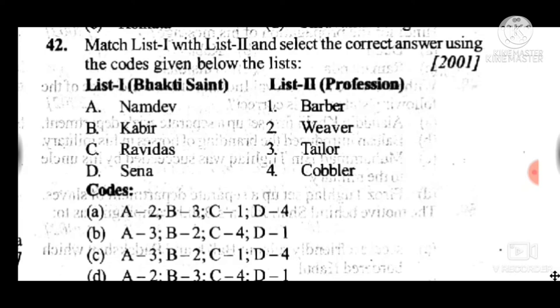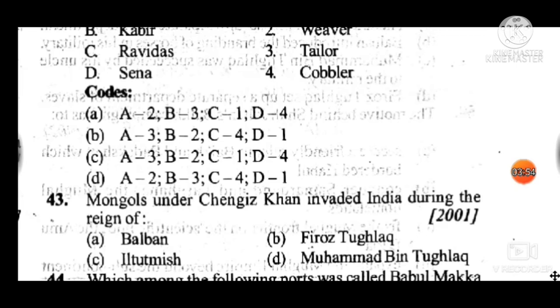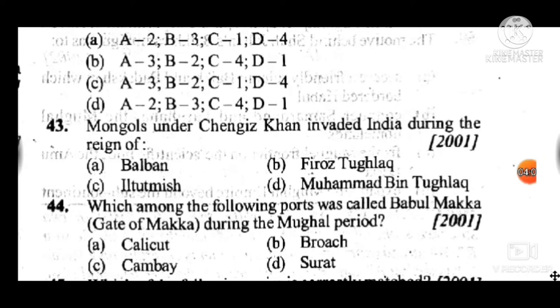Question 43: Mongols under Genghis Khan invaded India during the reign of — answer is C, Iltutmish. Question 44: Which one of the following ports was called 'Babul Makkah' (Gate of Makkah) during the Mughal period? Answer is D, Surat.